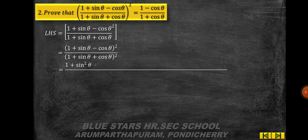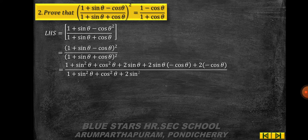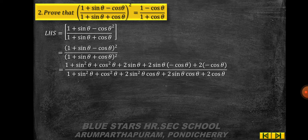Taking (1 + sinθ) as a and cosθ as b, using the (a − b)² formula for the numerator: 1 + sin²θ + cos²θ + 2sinθ − 2sinθcosθ − 2cosθ, divided by the denominator using (a + b)² or the (a + b + c)² formula.